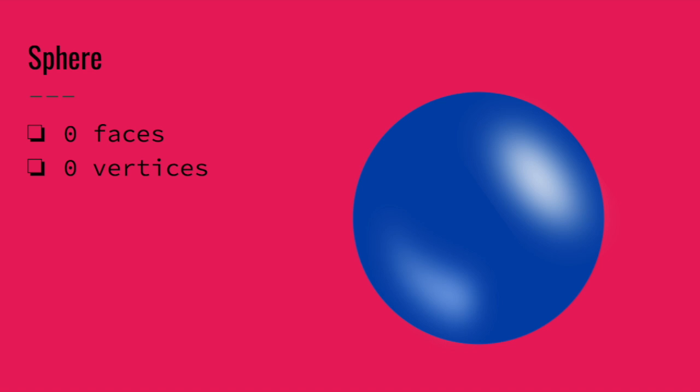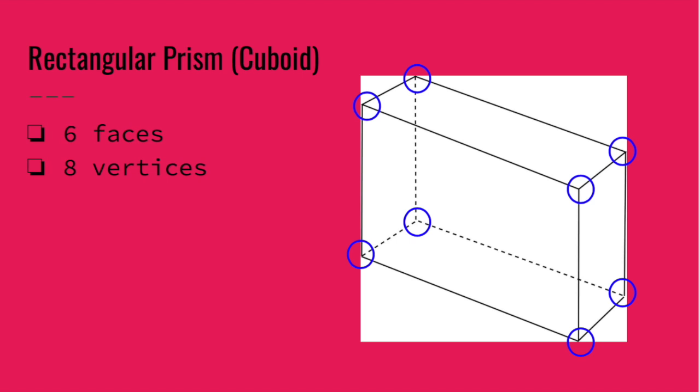The next shape we're going to talk about is a rectangular prism. A rectangular prism can also be called a cuboid. You can call it either one. They mean the same thing.